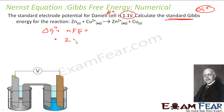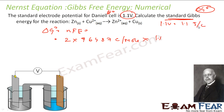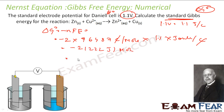Let's put the values here. N is equal to 2, F as we know is 96487 coulombs per mole, and E-naught is 1.1 volt, which I can write as 1.1 joules per coulomb. So delta G-naught equals minus NfE-naught: minus 2 × 96487 × 1.1 joules per coulomb. Coulombs cancel, and you get minus 212,122 joules per mole, or minus 212.1 kilojoules per mole. That is my standard Gibbs free energy.